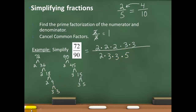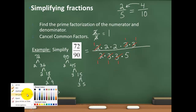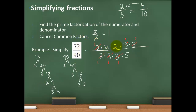Now I have the prime factorizations of both numbers. I'll cancel any common factors — numbers common to both numerator and denominator. I have a 2 in the numerator and a 2 in the denominator — cancel them. I only have one 2 in the denominator, so the remaining 2's can't all cancel. I can cancel the 3 and 3, and cancel the other pair of 3's. What I'm left with in the numerator is 2 times 2, which is 4. In the denominator I'm left with 5. So the simplified fraction is 4 over 5.